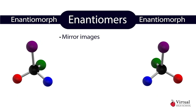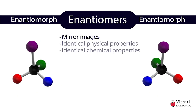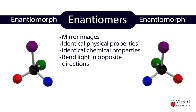Because they have such similar spatial configurations, enantiomers have identical physical and chemical properties with one exception: they bend light in opposite directions.